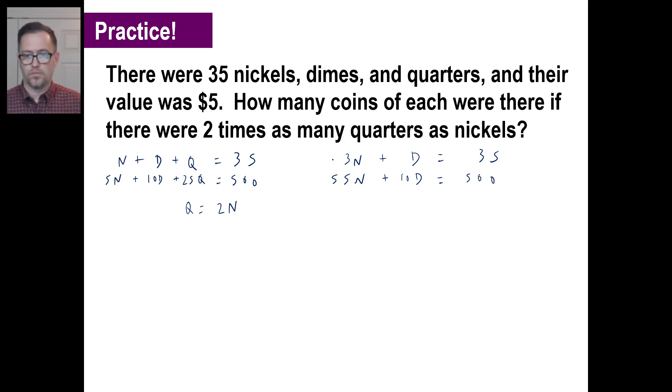On this one, 25 times q will be 25 times 2n. That will give us 50n plus 5n is 55n. 5n plus 10d equals 500. Let's get rid of the d. We'll multiply everything by 10 here. So we'll call that 30n plus 10d equals 350. And we'll subtract. 30 minus 55 is negative 25n. 350 minus 500 is negative 150. And 25 goes into 150 six times. So we have six nickels. Six nickels is 30 cents.